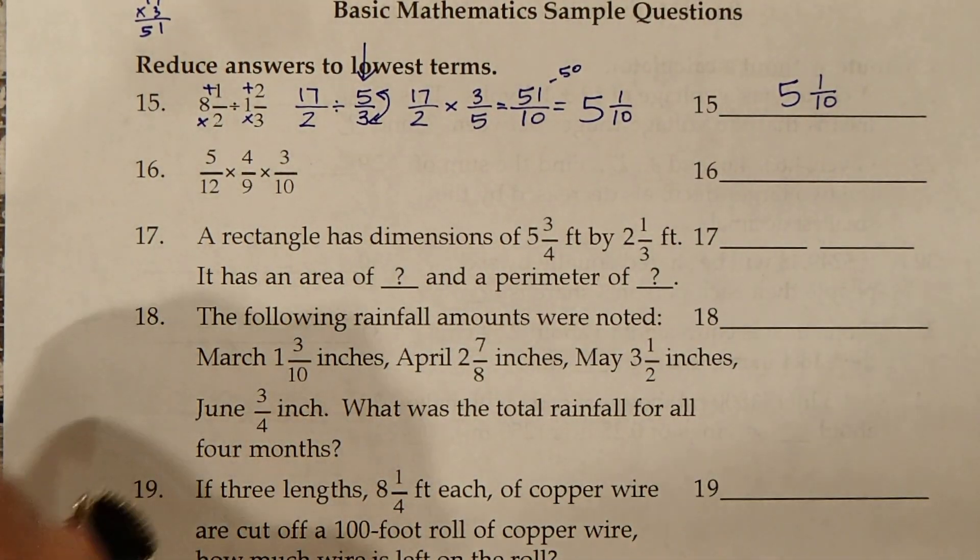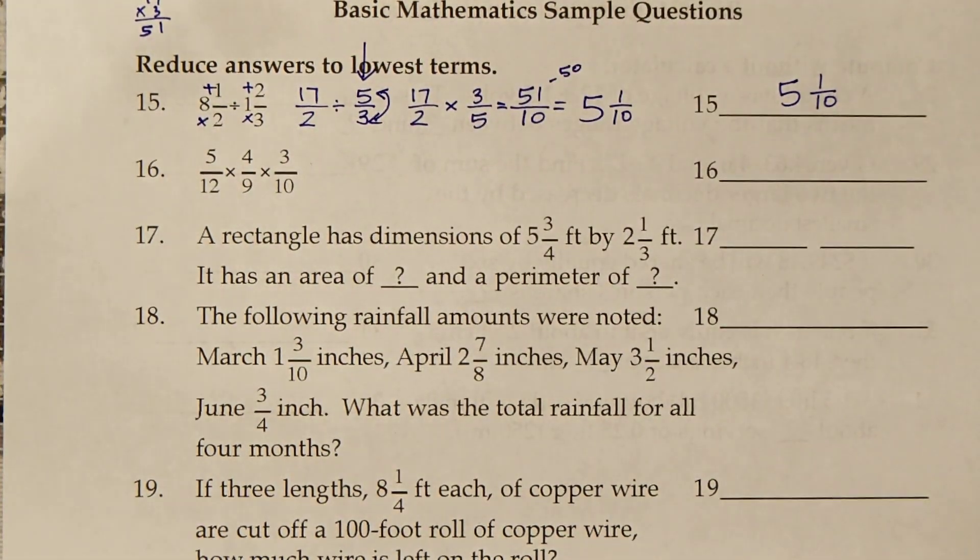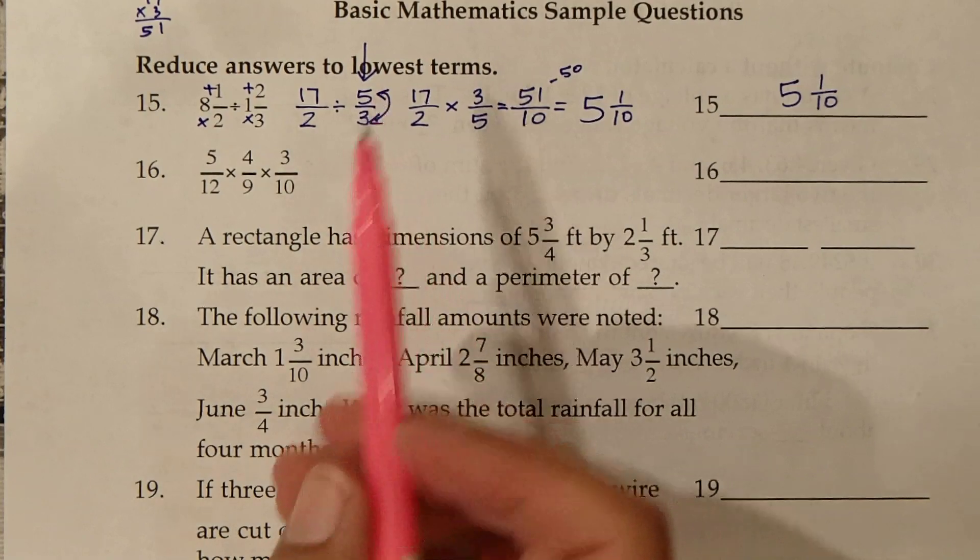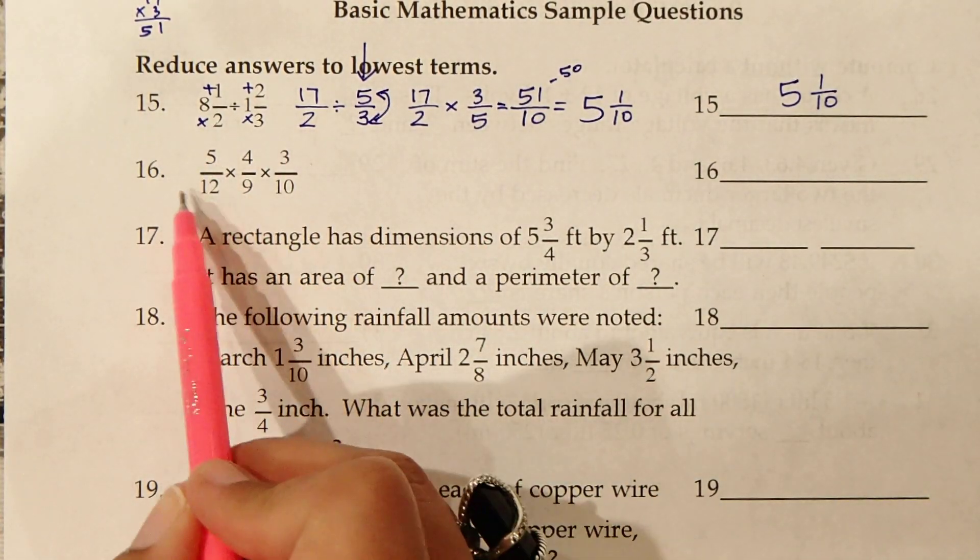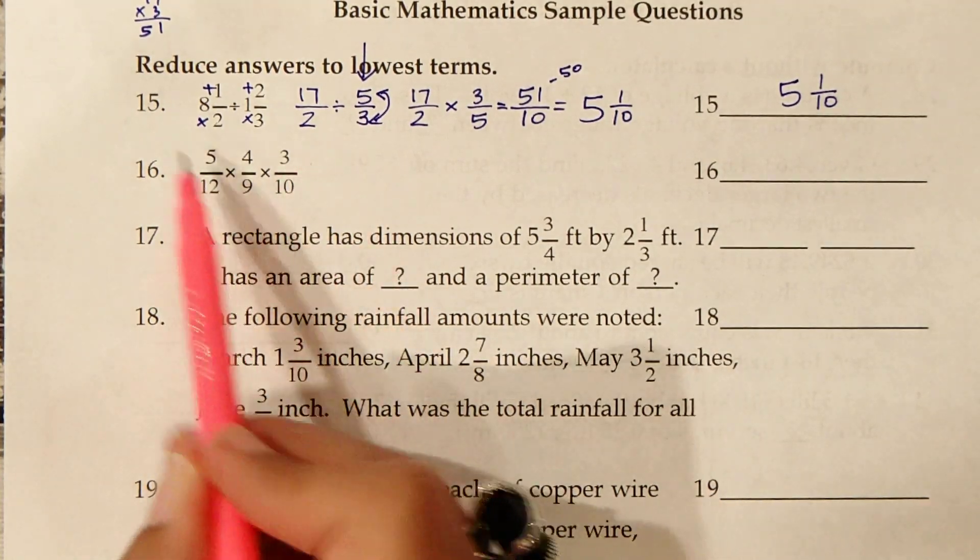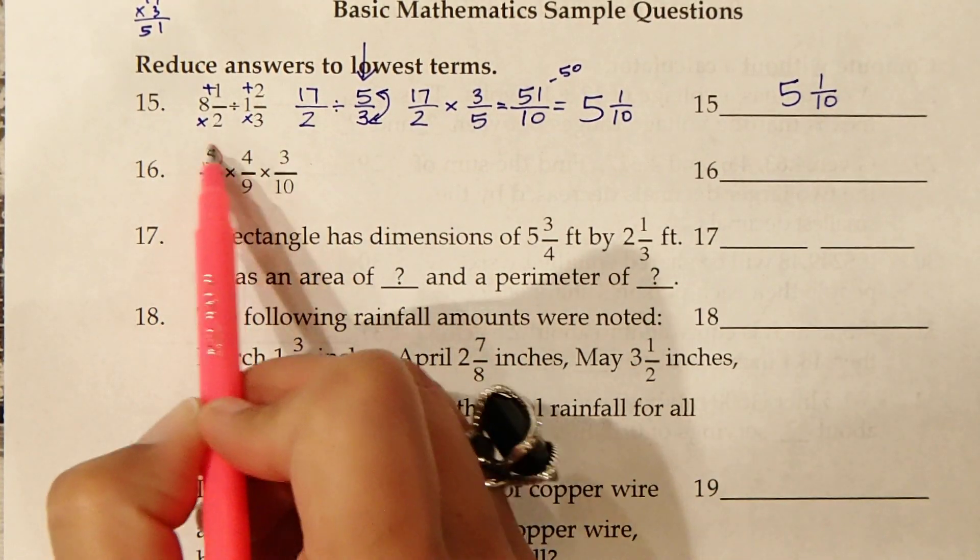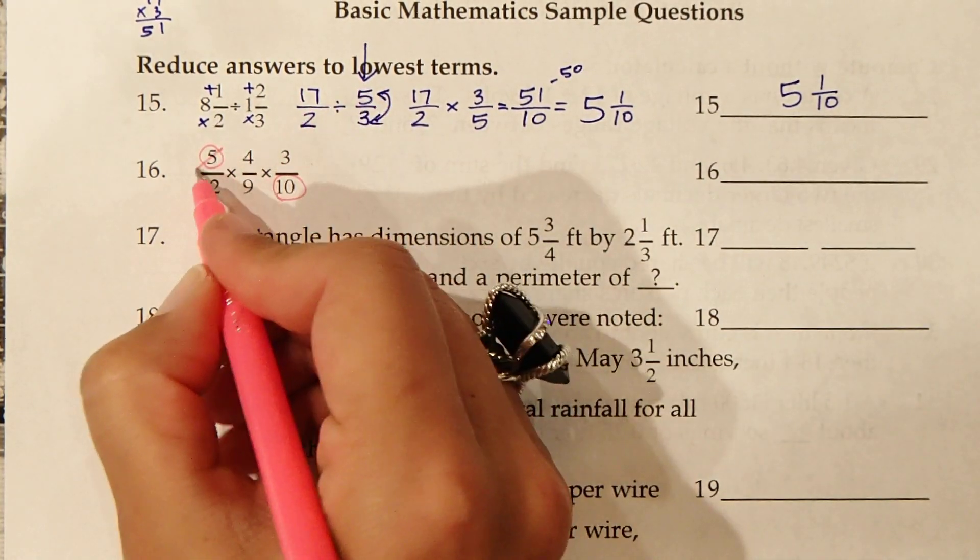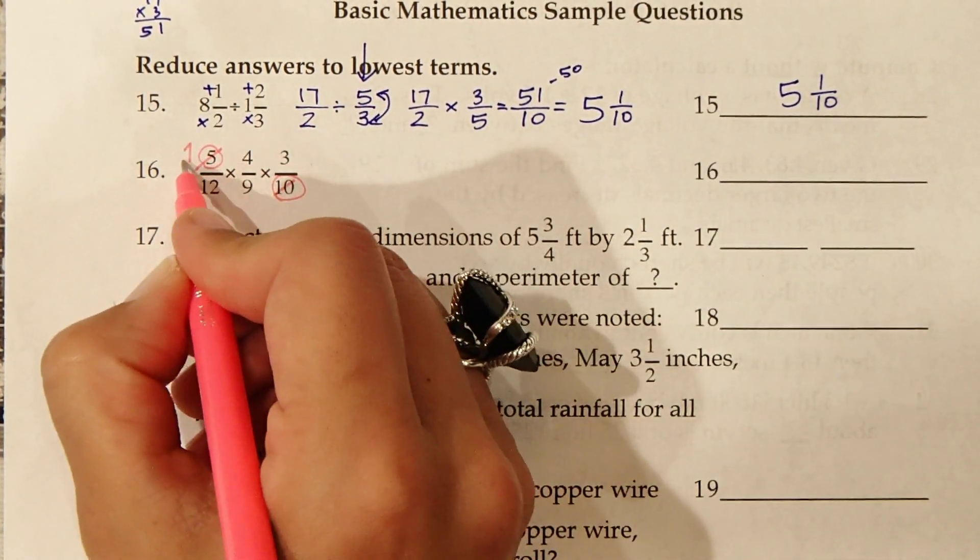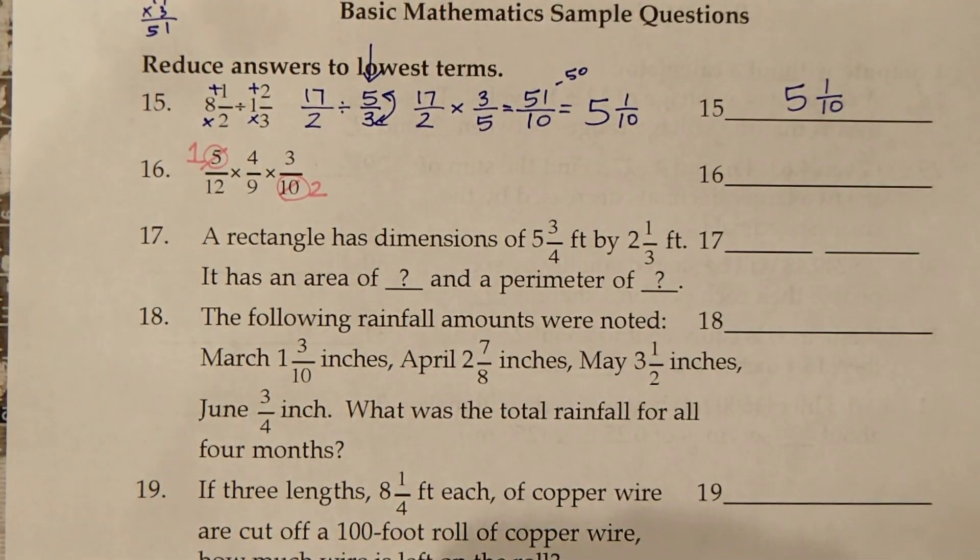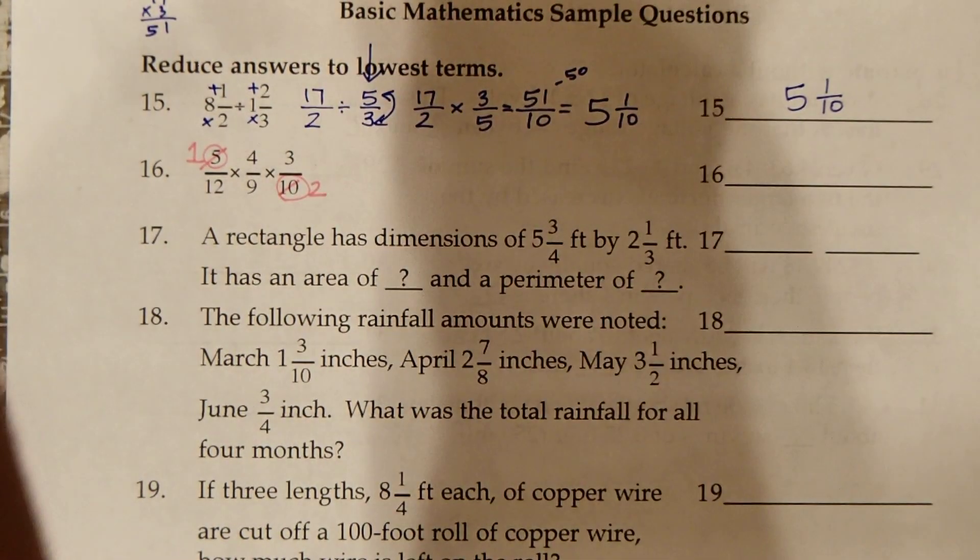Number 16. This is where cross-reducing comes in handy. I'm going to look for fractions that can reduce across. I see this 5 and this 10, those can both be divided by 5. This becomes a 1, this becomes a 2, just reducing it as if it was 5 tenths.